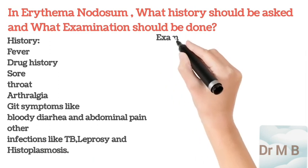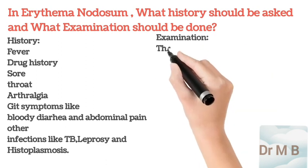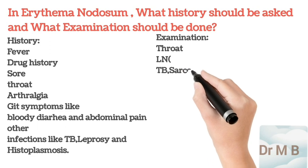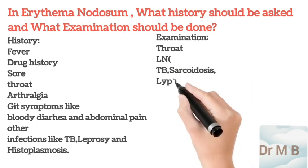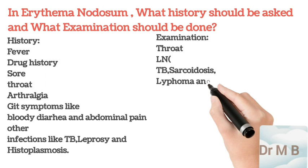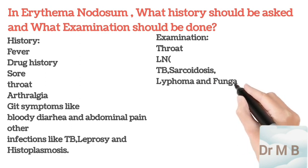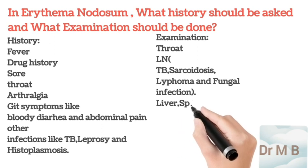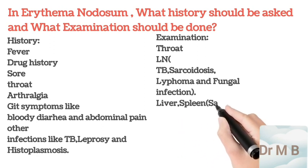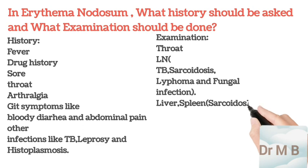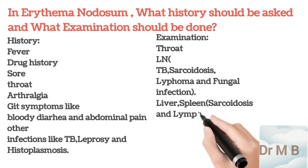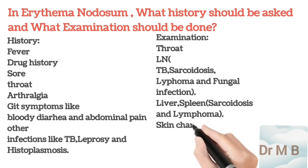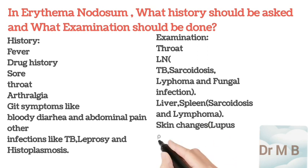On examination, always examine the throat for congestion, which is seen in sore throat due to Streptococcus beta-hemolyticus. Always examine lymph nodes for enlargement, as seen in lymphoma, tuberculosis, and sarcoidosis. Look for liver and spleen enlargement to rule out sarcoidosis and lymphoma. Look for skin changes like lupus pernio in sarcoidosis.